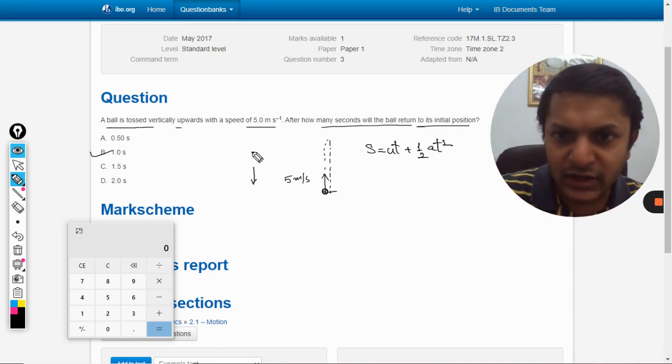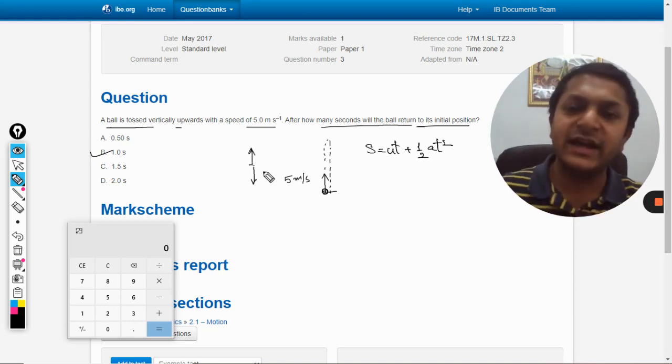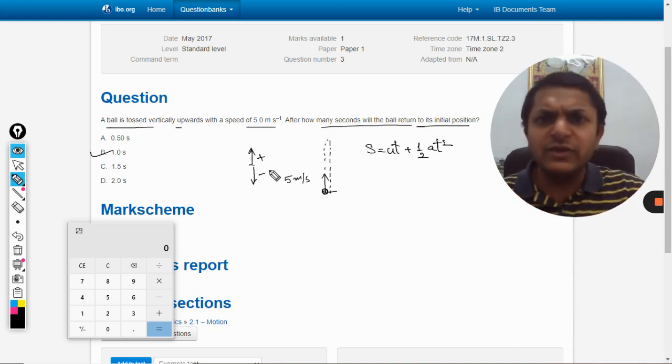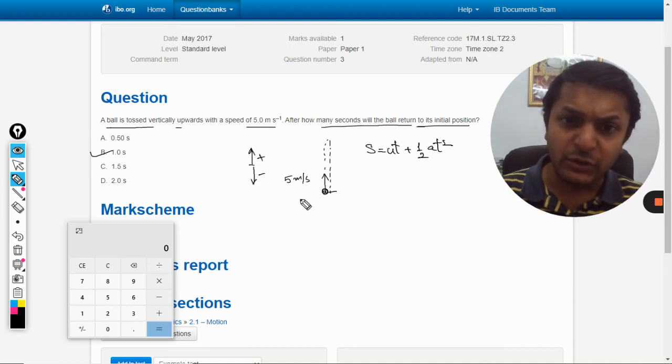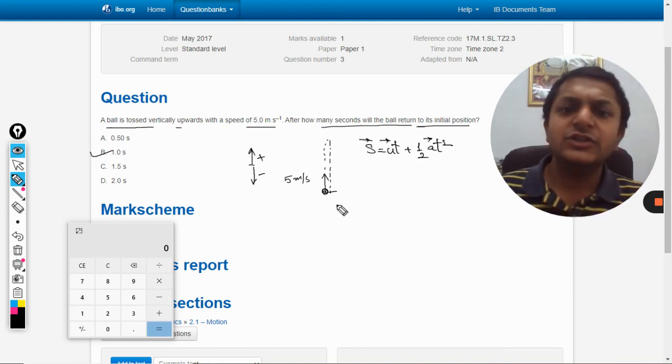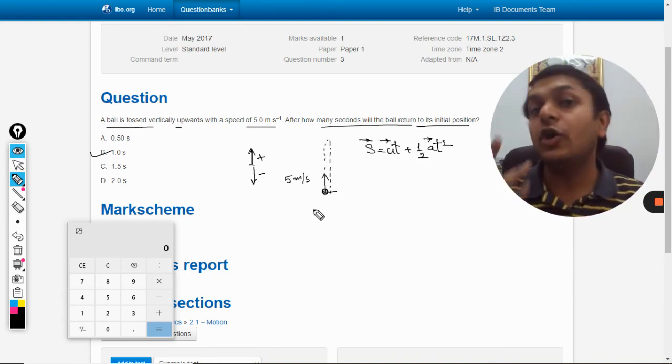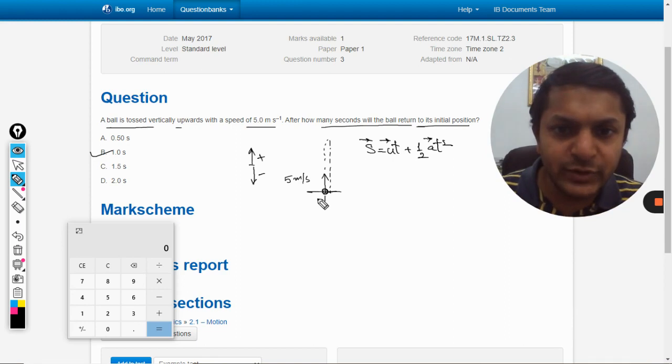We can take gravity as negative and velocity as positive because we have thrown it upwards. We will apply the formula. This is a vector equation. We need to understand where the origin is. Origin is taken to be the initial position.